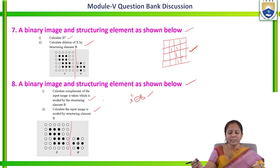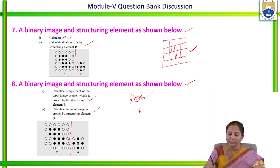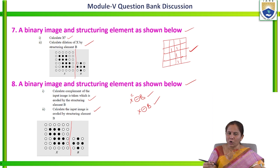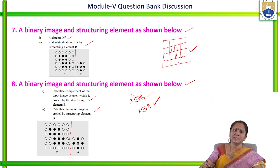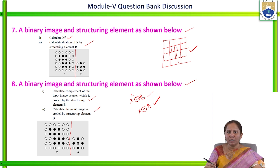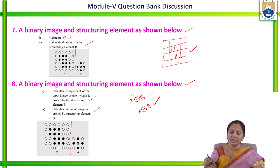Next, calculate the required parameter where the input image X is eroded directly by the structuring element B. The only difference between these two problems is that in the first we complement X before erosion, whereas here we directly take X and perform the erosion operation with B. After the operation, we represent the result as an output image. Such problems have been solved in previous classes — you can refer to the playlist.